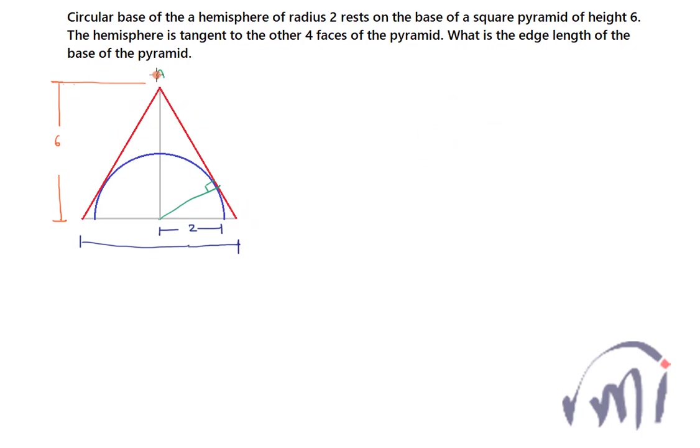Now let me name all these points. Let it be A, the center of the hemisphere O, and this be B, and let this point be C. Now if I see in that particular plane, the plane passing through the vertex of the pyramid and the center of the hemisphere and cutting this square base like this.